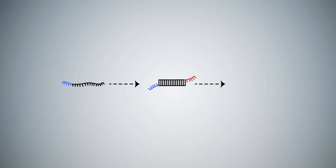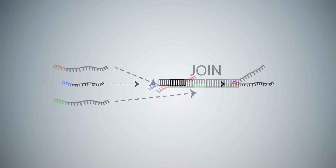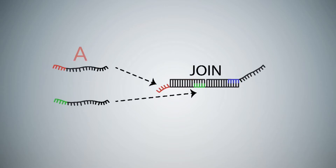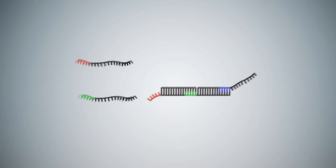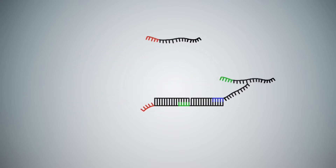Single strands of DNA can be used as both inputs and outputs. Here we show an example of a simple join operation, which takes two input strands to produce an output strand.